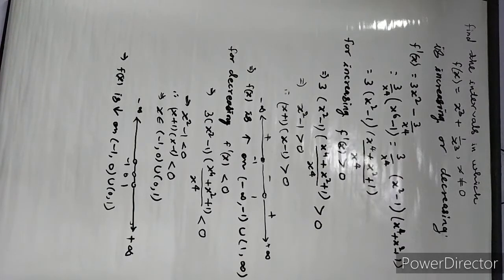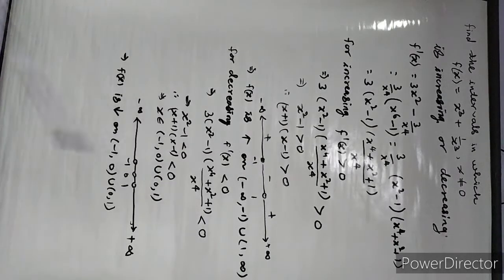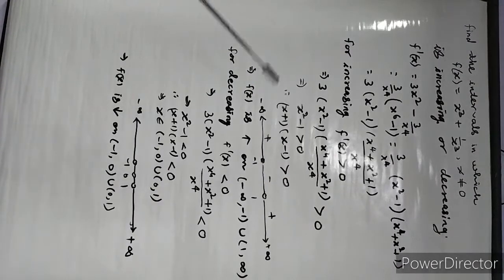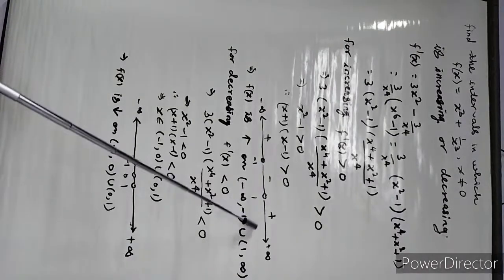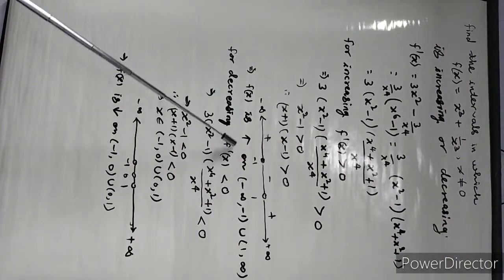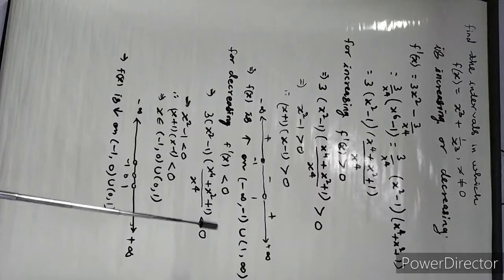Now between -1 and 1, putting x = 0: (0 + 1)(0 - 1) gives negative, so f'(x) is negative here. From 1 to ∞, putting x = 2: (2 + 1)(2 - 1) = 3 × 1 = 3 > 0, so increasing in (1, ∞). Therefore f(x) is increasing on (-∞, -1) ∪ (1, ∞).